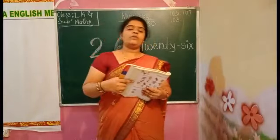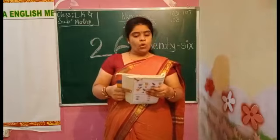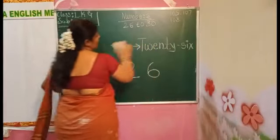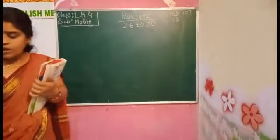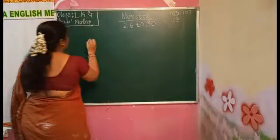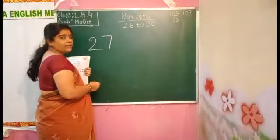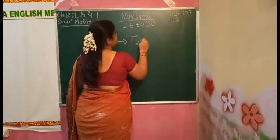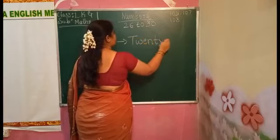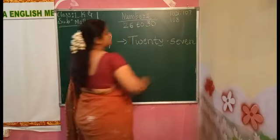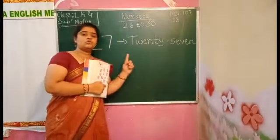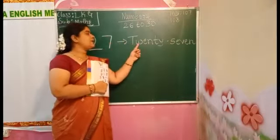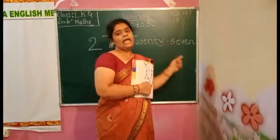These 2 pages are today's homework — you have to do in your test book only. We learned number 26. After 26, which number will come? That is 27. How we have to write the number 27? 2, 7 — 27. The number name of 27 is T-W-E-N-T-Y-S-E-V-E-N. 27.